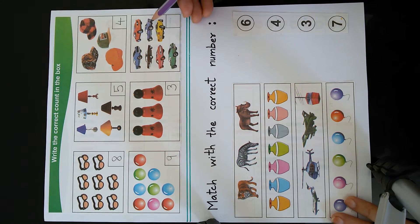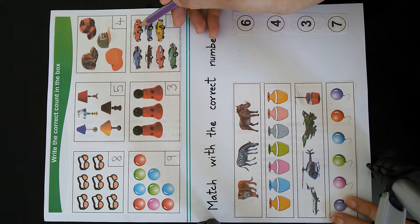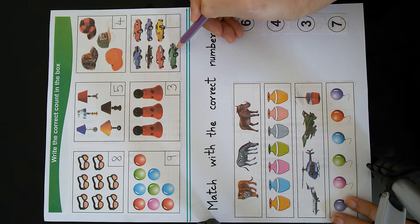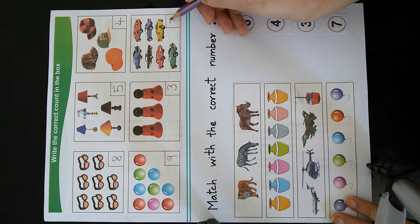This picture shows cars. 1, 2, 3, 4, 5, 6, 7. So there are 7 cars.